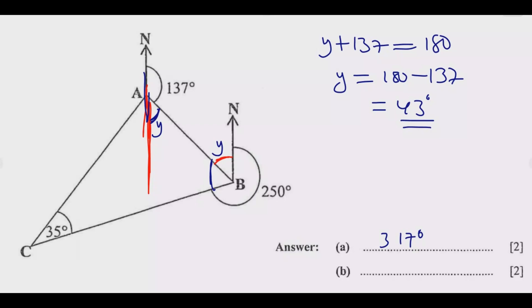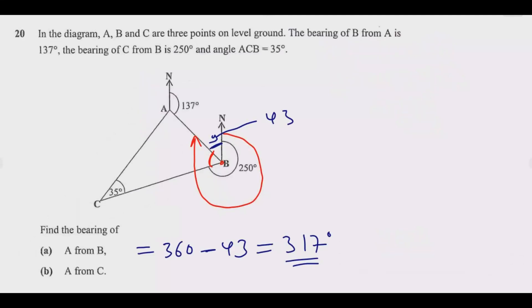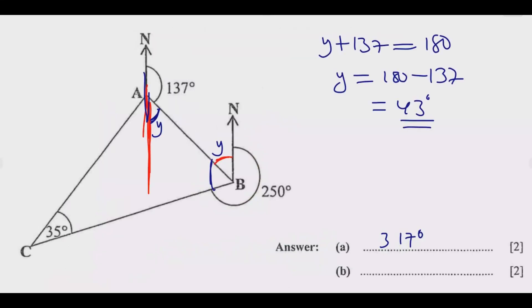Then we can go to question b. Question b is find the bearing of A from C. This tells me that you go at C, draw the north, then you turn. So this is the angle we're looking for. This angle is what we are looking for.